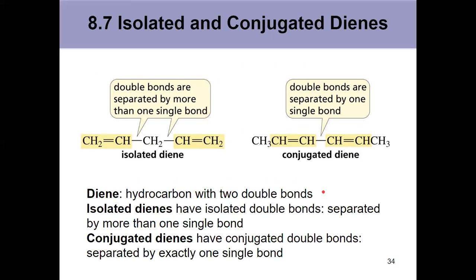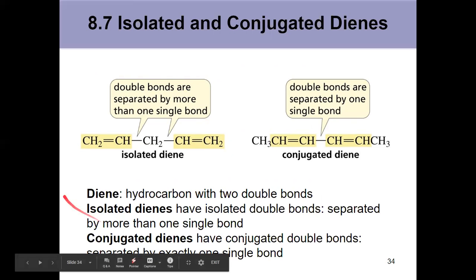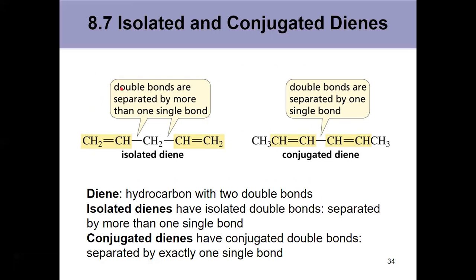Dienes are hydrocarbons with two double bonds. Isolated dienes have isolated double bonds separated by more than one sigma bond. Conjugated dienes have their double bonds separated by exactly one single bond — not zero, not two, not three. The pattern to look for is: double bond, single bond, double bond. That's how you identify a conjugated diene.